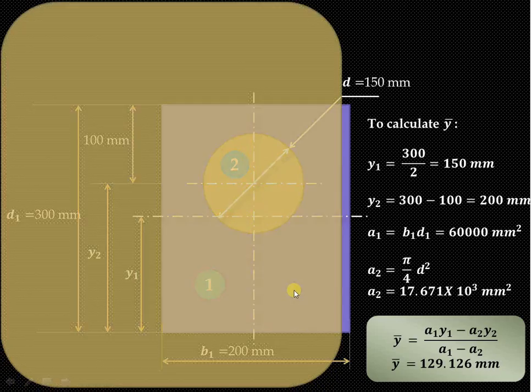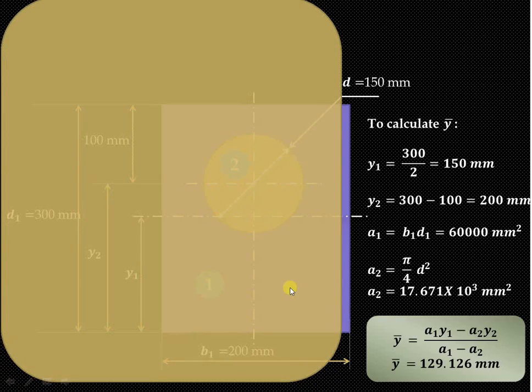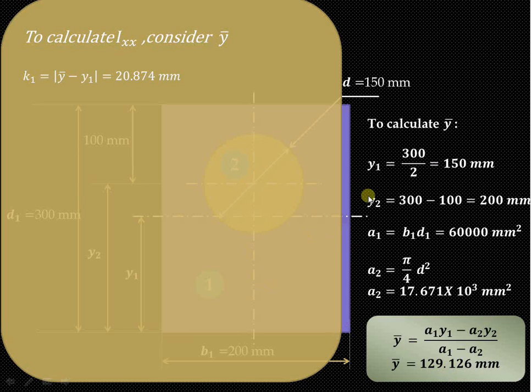Now we have to calculate the Ixx in this particular case. To calculate Ixx, consider ȳ is 129.126. Find out the radius of gyration: k1 is |ȳ - y1|, that is 20.874 mm, and k2 is |ȳ - y2|, that is 70.874 mm.